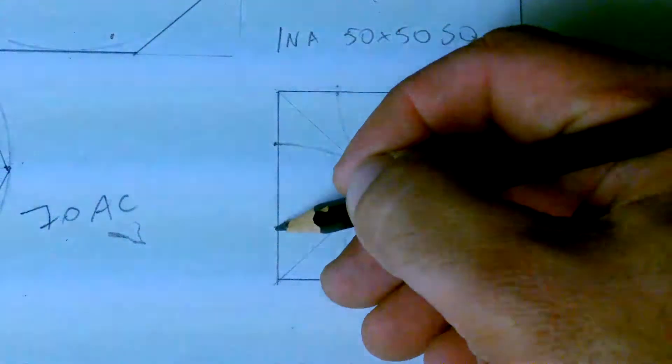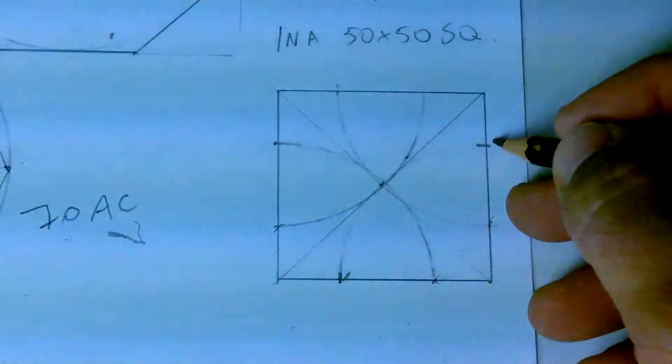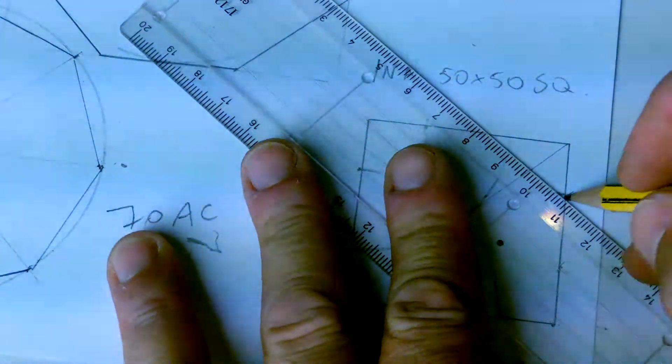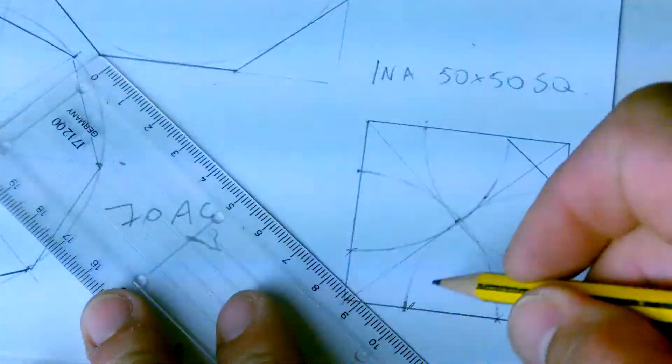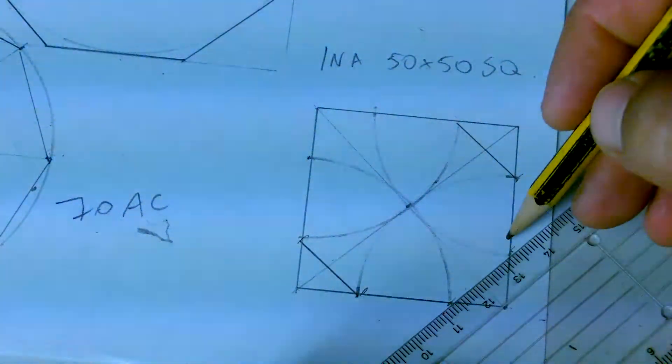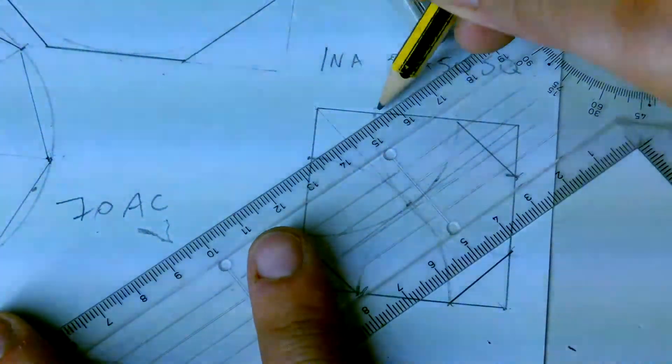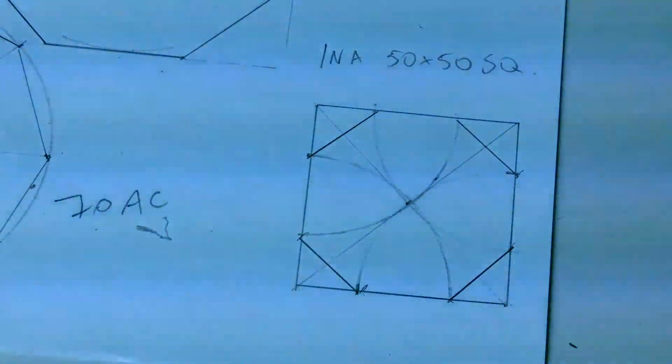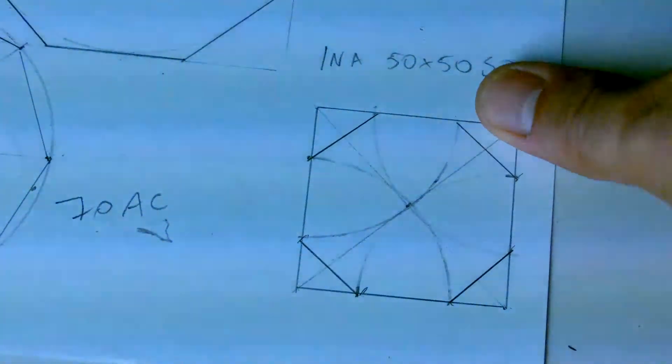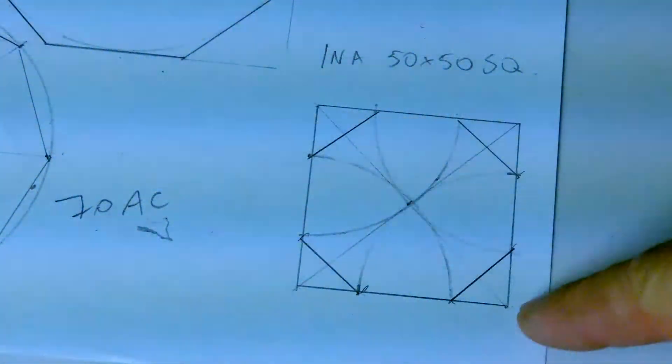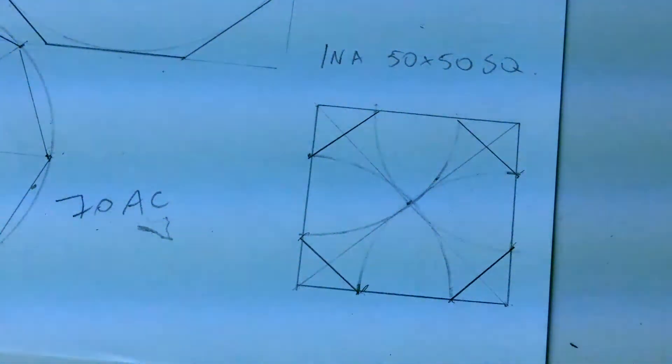If you join these points here, you'll get your octagon. I should have left the square fainter so you could see properly the octagon, but I ducked and this square in the first hand.